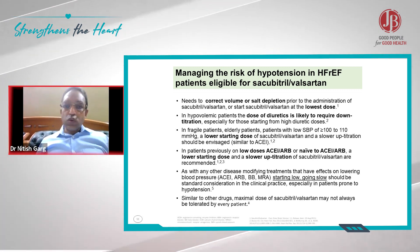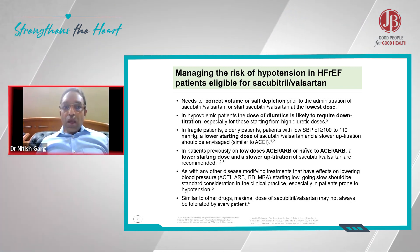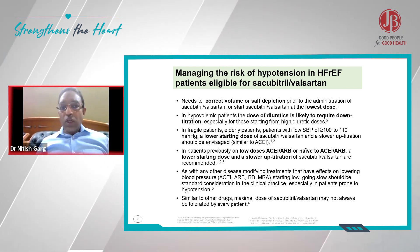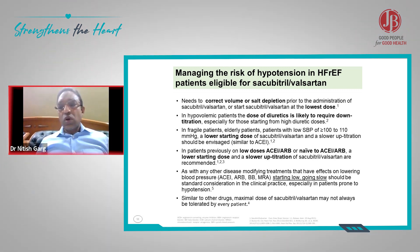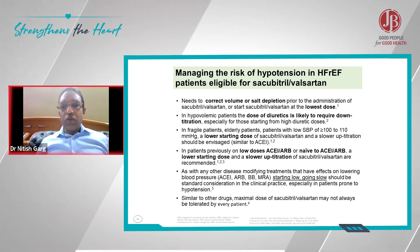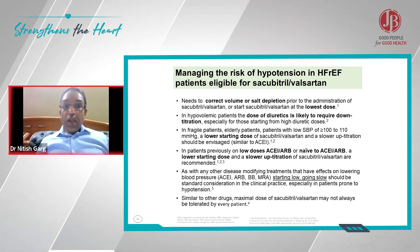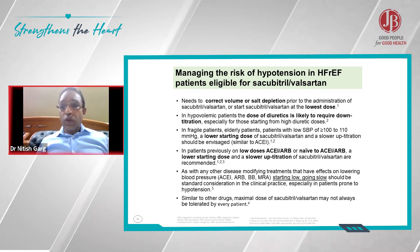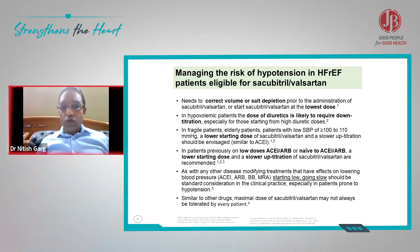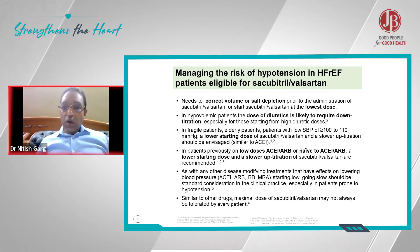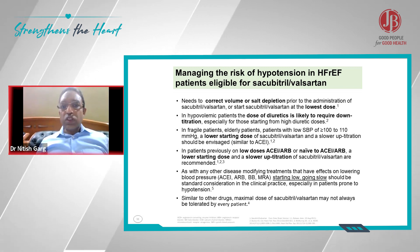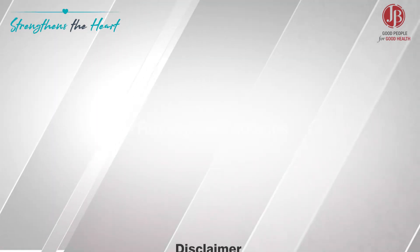A lower starting dose of sacubitril is quite helpful, and you need to up-titrate these patients slowly — maybe within two to four weeks. Patients previously on a low dose of ACE inhibitors should start with a low dose of sacubitril. Starting low and going slow is the dictum in patients who have low blood pressure.